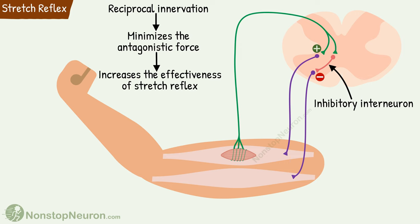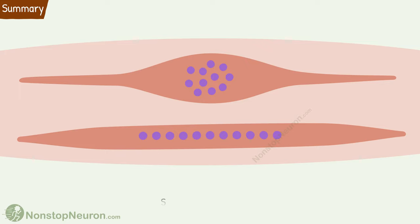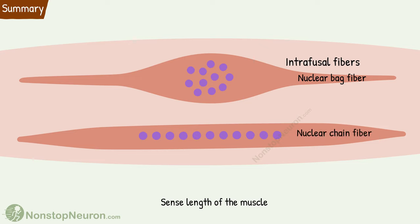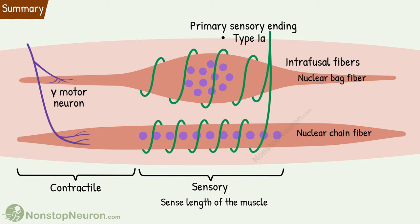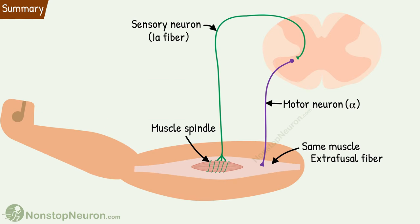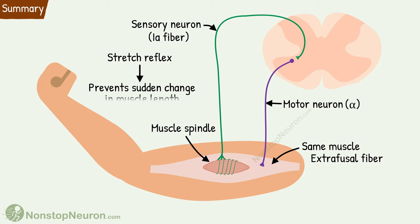This completes all the points we wanted to cover in this video. We will understand the importance of motor nerve supply to the muscle spindle in a separate video. Here's a quick summary: The muscle spindle is a sensory organ to sense the length of the muscle. It's made up of intrafusal fibers, which are of two types — nuclear bag fibers and nuclear chain fibers. Their mid portion is sensory and is innervated primarily by type 1a fiber. The ends are contractile and are innervated by gamma motor neurons. Upon sudden stretching of the muscle, the spindle sends a signal to the spinal cord, where the sensory neuron directly stimulates the alpha motor neuron, resulting in reflex contraction of the same muscle. This stretch reflex prevents sudden change in the muscle length.